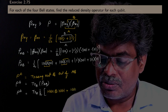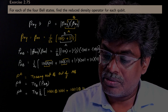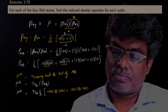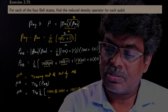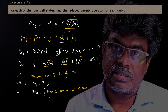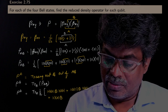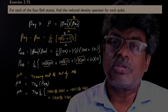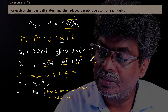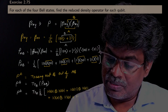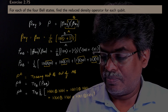Similarly, |11⟩⟨00| = |1⟩⟨0|_A ⊗ |1⟩⟨0|_B, and |11⟩⟨11| = |1⟩⟨1|_A ⊗ |1⟩⟨1|_B. Now I am going to apply the trace over B to each of these terms.